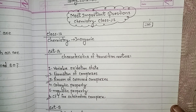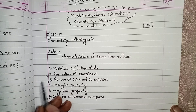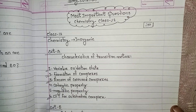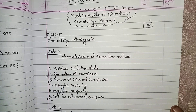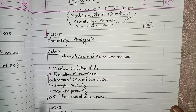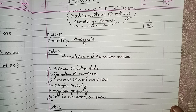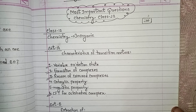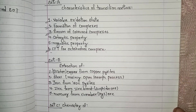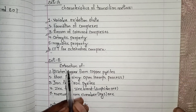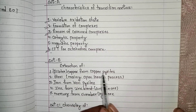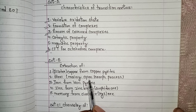This is a very important concept. Variable oxidation states — points 2 and 3 — are very important. This is a characteristic set A. Characteristics of transition metal points 1, 2, 3, 4, 6. In set B: points 1, 2, 3, 5.